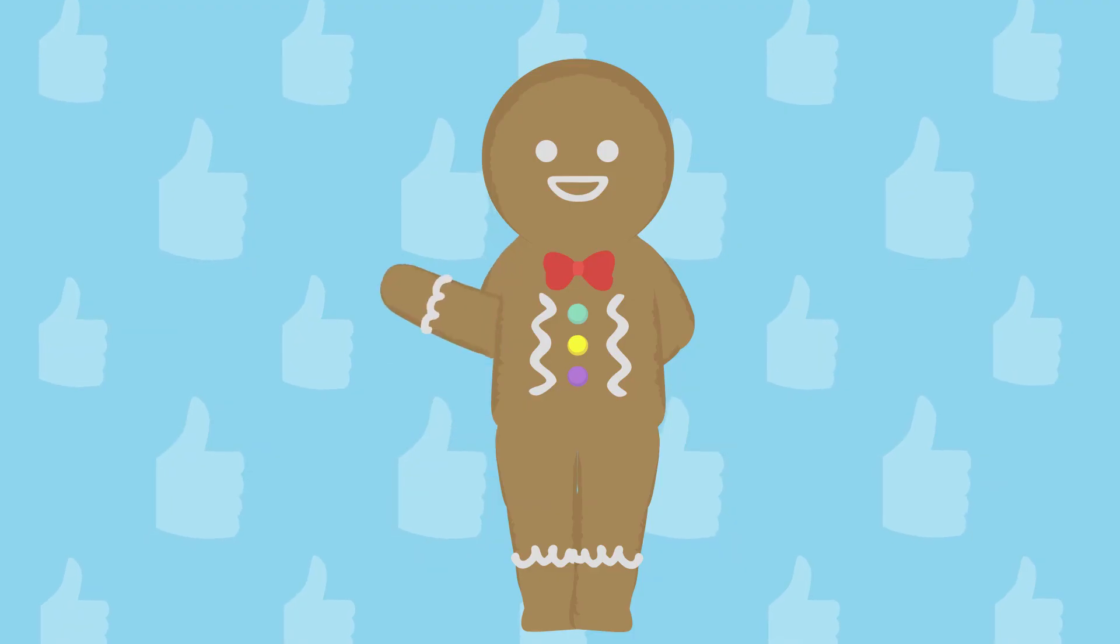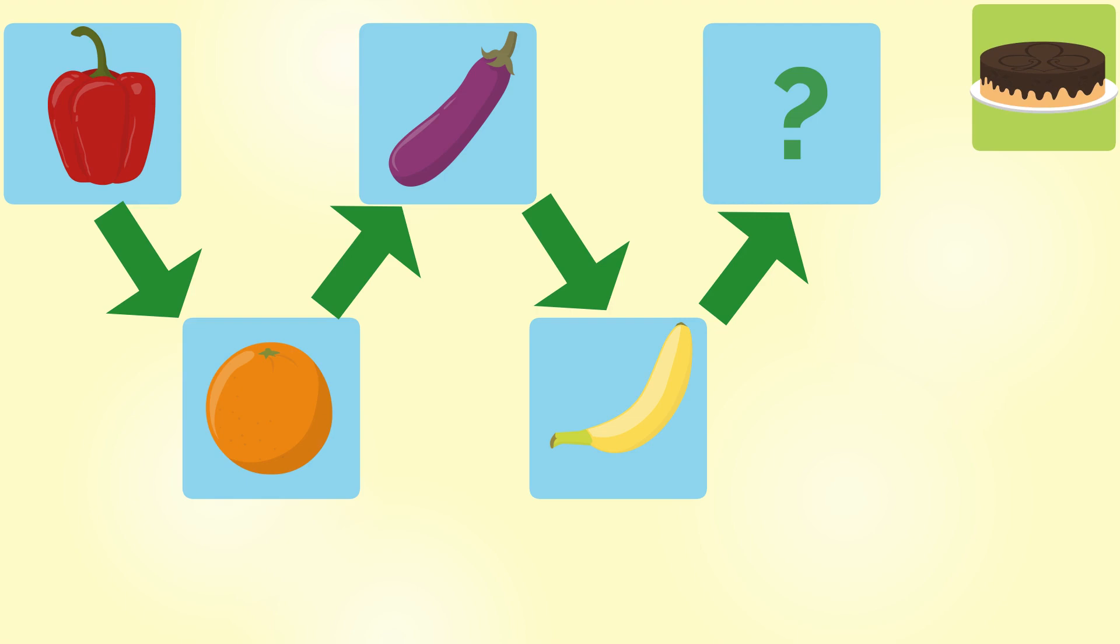Good job! Pepper, eggplant, banana. Find the odd one out. Cake, apple, carrot, or pineapple.